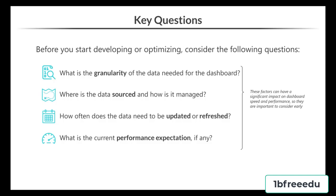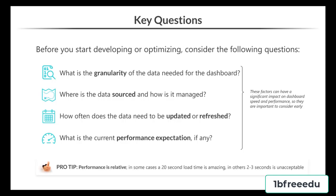Data that needs to be real-time will require live connections, which have their own performance optimization steps and limitations, while extracts open up a huge amount of flexibility and performance-enhancing options. Number four: what is the current performance expectation? It's important to know if the team has preconceived expectations around dashboard performance — they may be comparing to other programs, systems, or apps. Even if expectations are not realistic, get this baseline out of the way so you can set acceptable performance targets and head off surprises during development. Good performance is relative: for some teams 20 seconds is amazing, for others anything over 3 seconds is a failure.